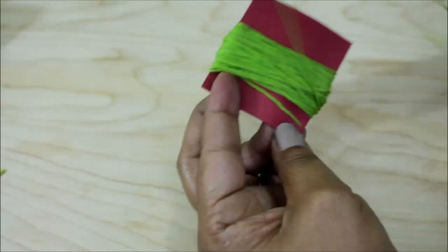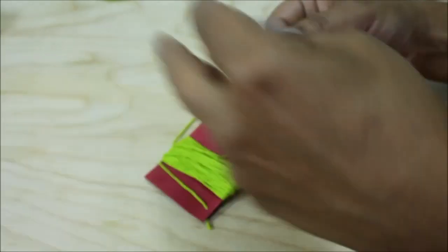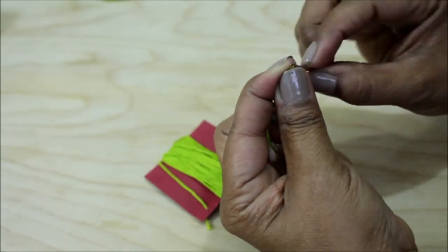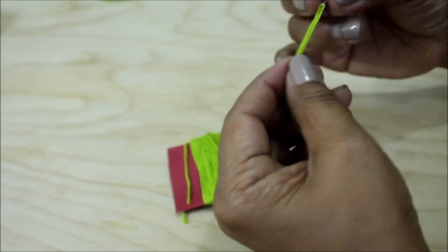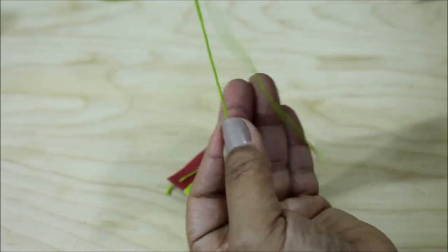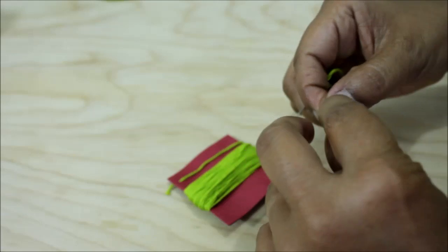Once you've done that, you're going to take one of the three strands and you're going to thread your needle. Finish feeding the thread through the needle and then you're going to fold it in half and at the very tip you're going to make two knots.